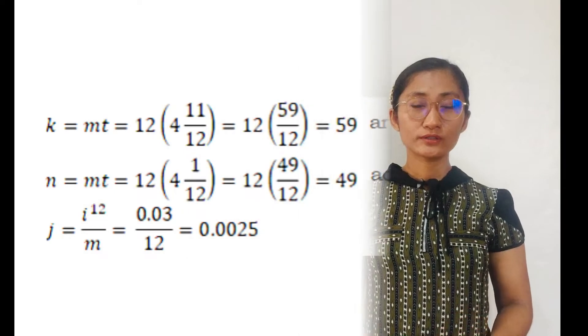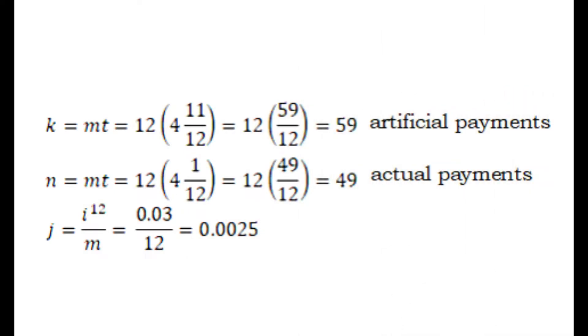To compute for the number of artificial payments, we have K equals M times T. M is 12, and T is 4 and 11 over 12. Why is it 11 over 12? It refers to 11 months. Since there are 12 months in one year, then 11 months is expressed this way, 11 over 12.